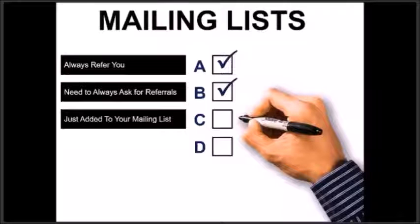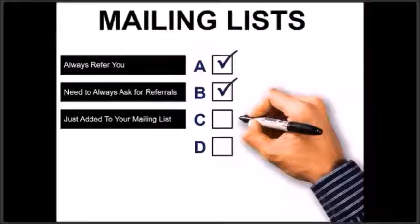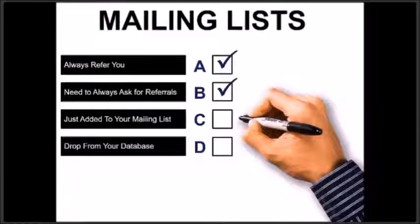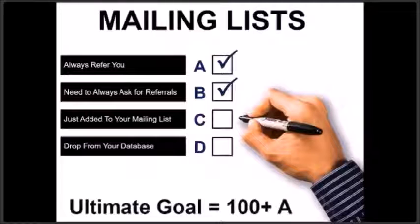C's are people that you've just met or have just added to your database through a friend or colleague. And sadly, all of us will have a D list of people that we need to drop from our database. Your initial goal here would be to try and increase your A list to over 100 clients.